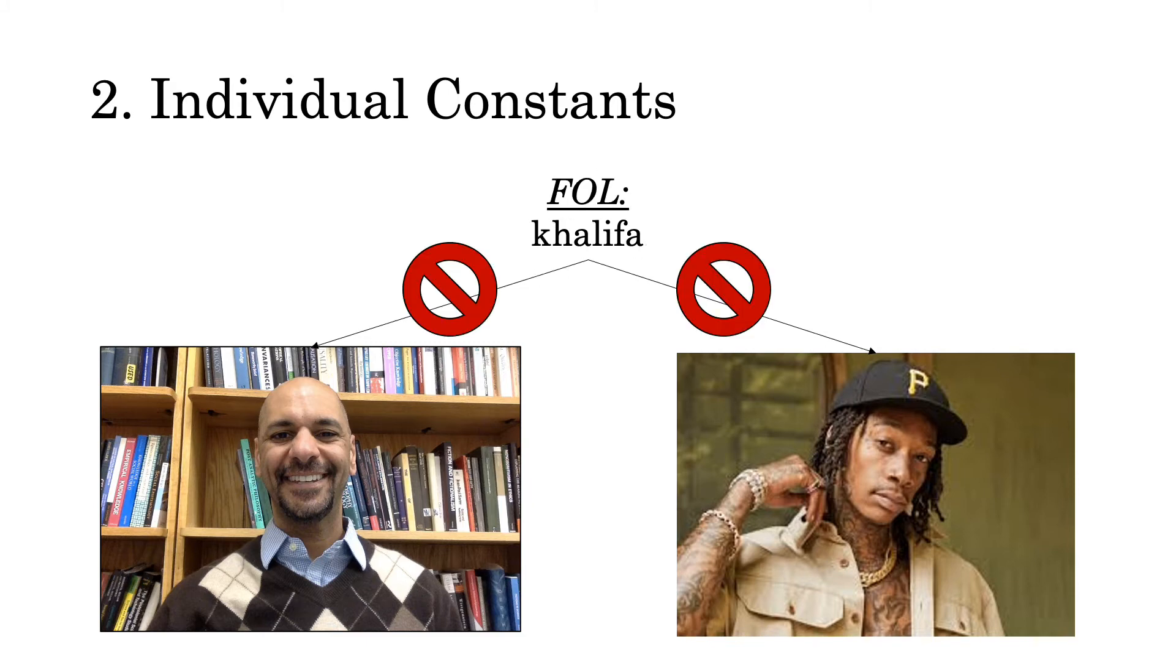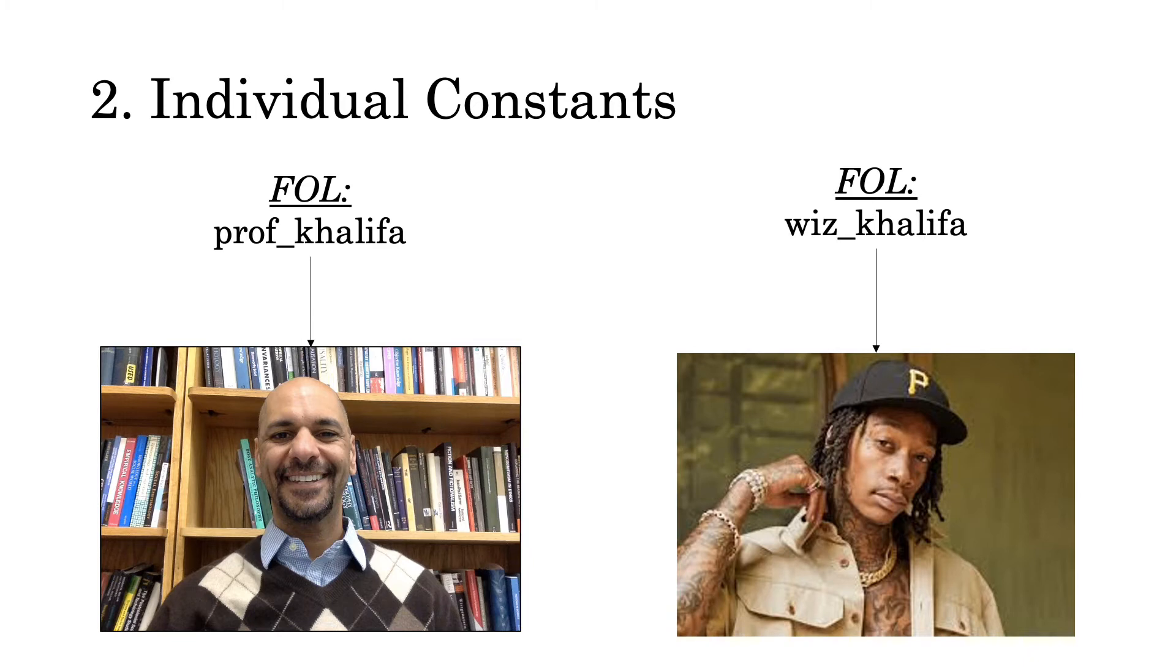In first order logic, that's not okay. We're trying to minimize ambiguity. And so, we'd want to know whether we're referring to the famous rapper from Pittsburgh or the really handsome logic professor. So, in first order logic, we're going to need at least two names to keep tabs on these different individuals. We might use, for instance, Prof Khalifa and Wiz Khalifa. You don't have to use those two names in particular, but you just need two distinct names.